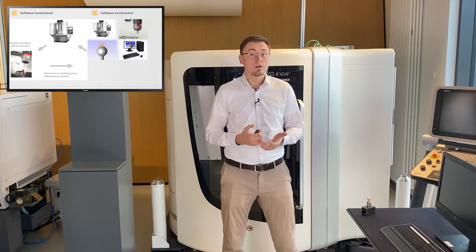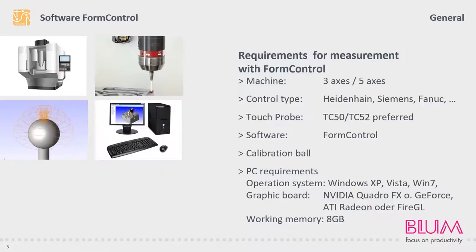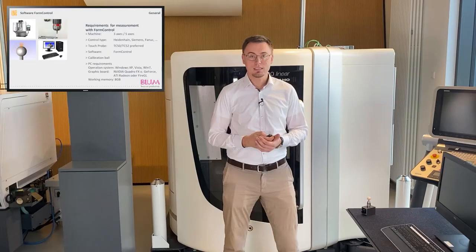Are you asking yourself if your production could benefit from this software too? I can tell you that it doesn't take much: a three-axis or five-axis CNC milling machine, a touch probe such as the Bloom Touch Probe TC60, a calibration sphere and a Windows PC.